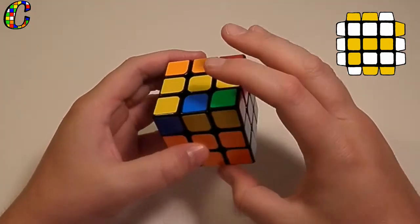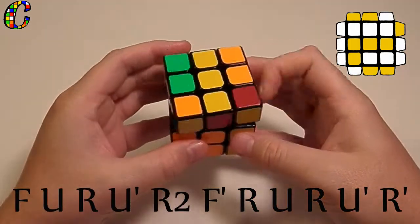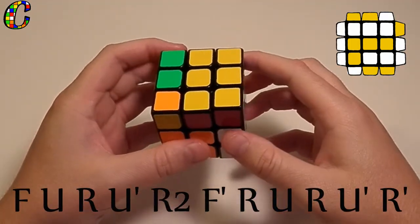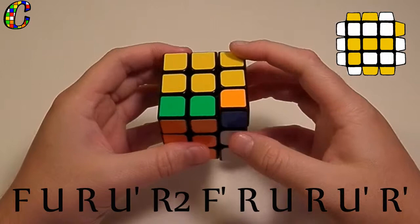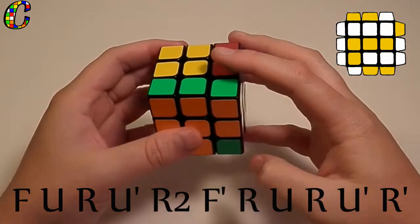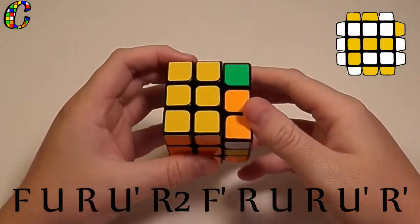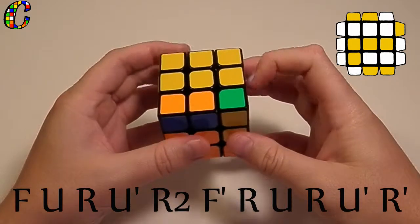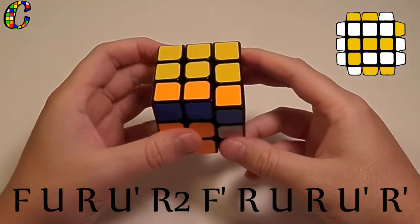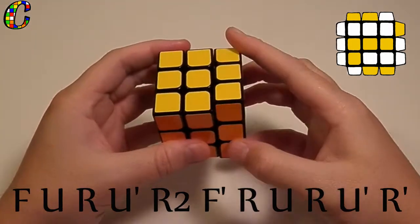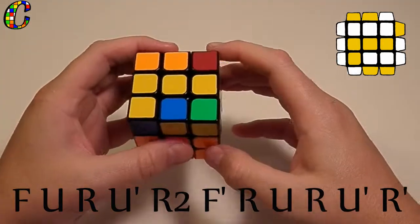And the algorithm you use to fix this case goes like this: F, U, R, U', R2, F', R, U, R'. And here's how I execute this algorithm.